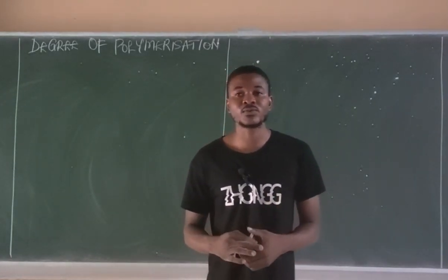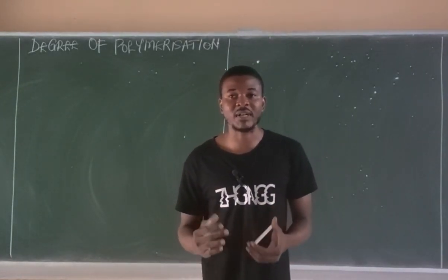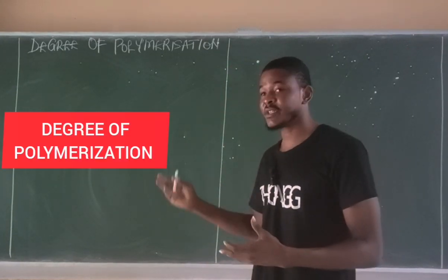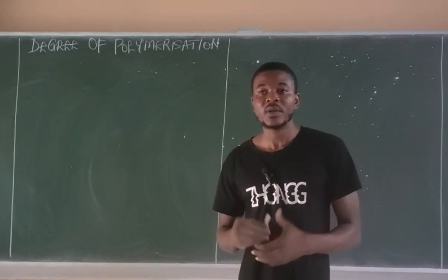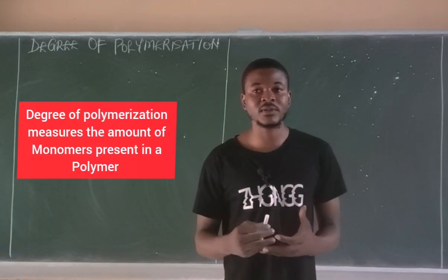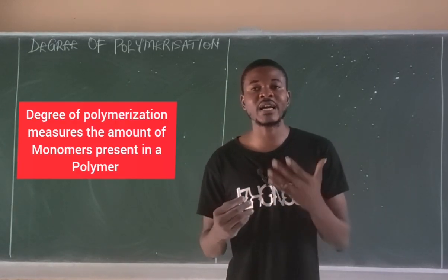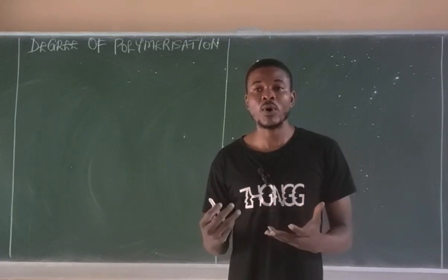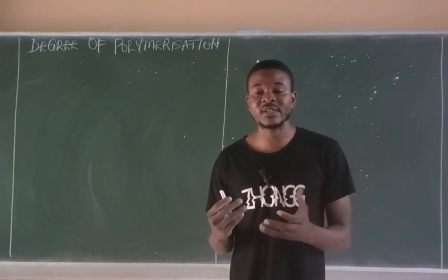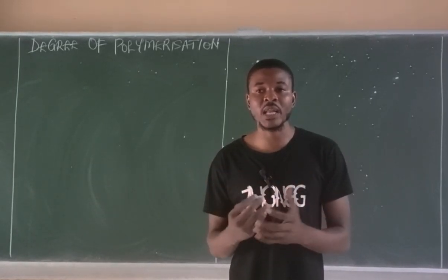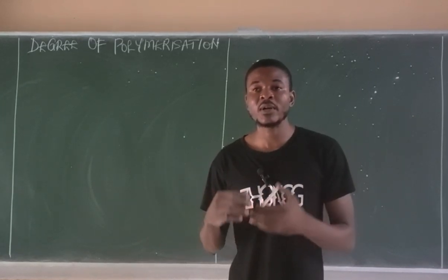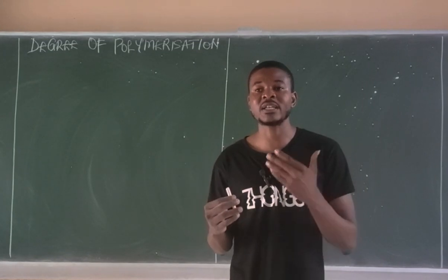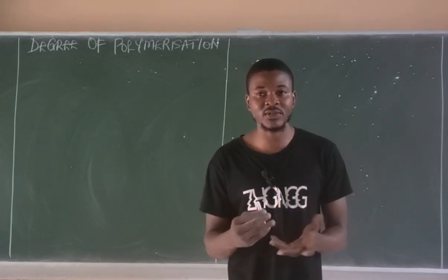Hello and welcome to today's class on material science. In today's class we are going to be talking about degree of polymerization. Degree of polymerization measures the amount of monomer units which are present in a polymer. Polymerization is simply the process where several monomers come together to form a polymer, and the extent of monomer present in a polymer is what is called degree of polymerization.